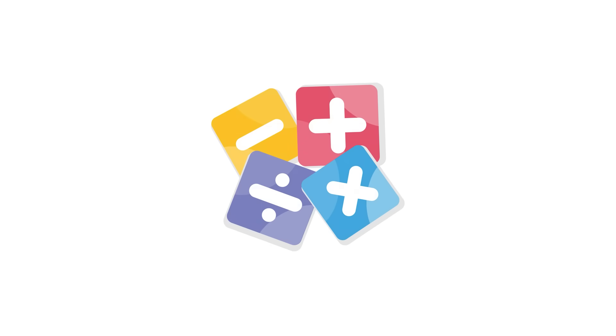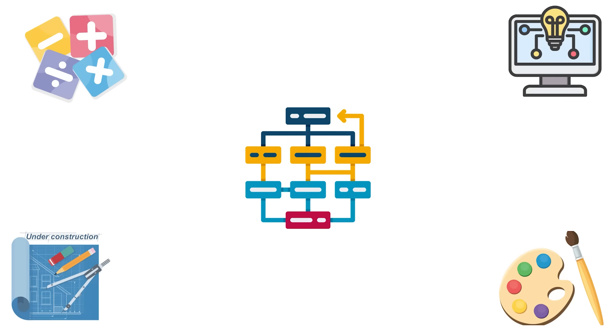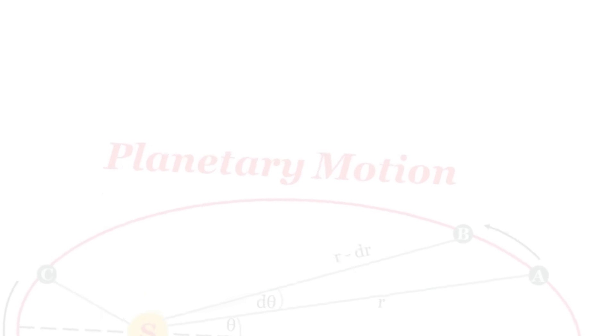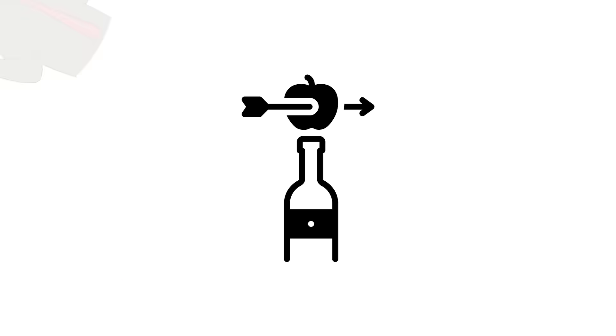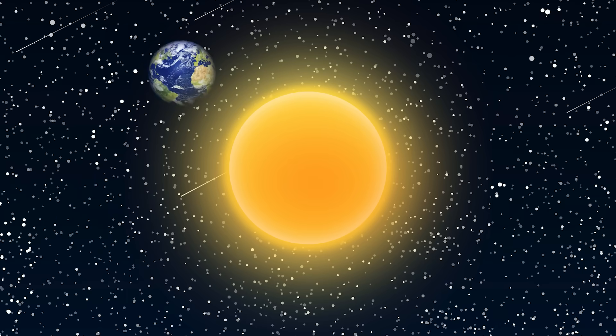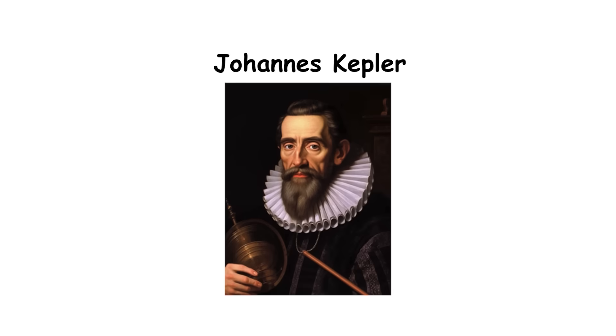1609: Kepler's laws of planetary motion. Kepler's laws accurately describe the motion of the planets, challenging the geocentric view. Their discovery allowed us to understand gravity and laid the foundations for Newton's theory, transforming modern astronomy and physics.